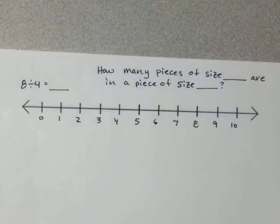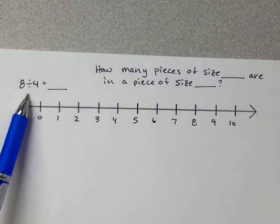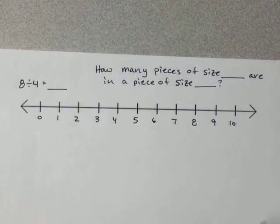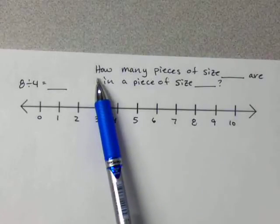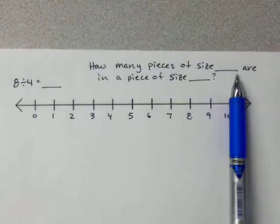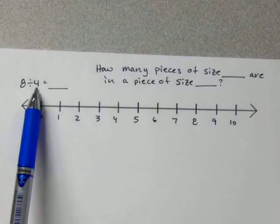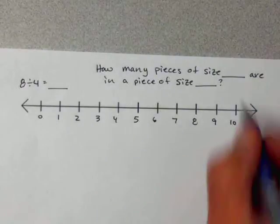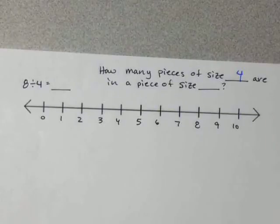Let's look at how we divide on a number line. We're going to start with a whole number expression: 8 divided by 4, and we're going to use our number line to do that. The thing about division — it helps sometimes to think about it as a question: how many pieces of size blank are in a piece of size blank? In this case, we want to know how many pieces of size 4 are in a piece of size 8.